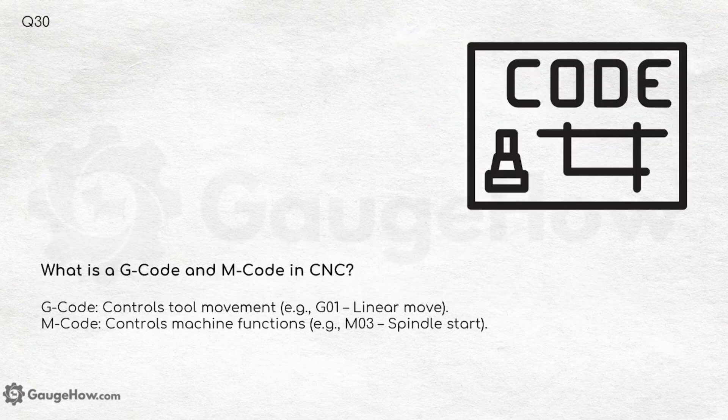What is G-code and M-code in CNC? G-code controls tool movements — for example, G01 is linear movement. M-code controls machine functions — for example, M03 is spindle start. Always remember to know the basics of G-code and M-code for interviews, as they may ask you what a specific code means, so prepare each one separately.